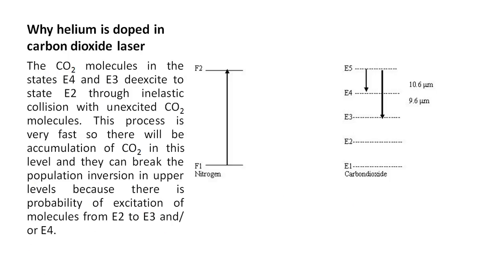Why helium is doped in carbon dioxide laser: The CO2 molecules in the states E4 and E3 de-excite to the state E2 through inelastic collisions with unexcited CO2 molecules. This process is very fast, so there will be accumulation of carbon dioxide in this level.